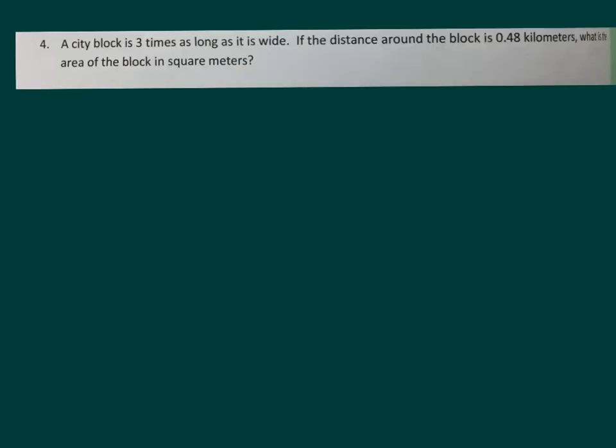A city block is 3 times as long as it is wide. If the distance around the block is 0.48 kilometers, what is the area of the block in square meters? So if the block is wide, this is the width, then the length is 3 times that amount. Now, the other thing that we have to consider, though, is that we have the length being 3 times the width.